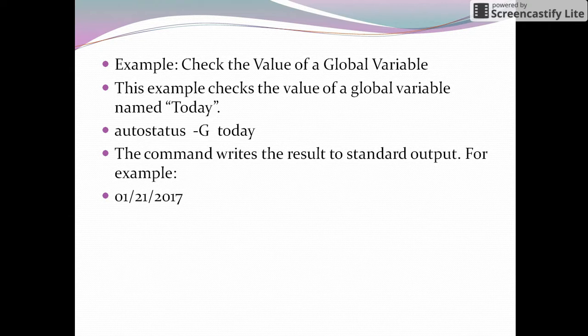We can get that value using the command autostatus -g today. In some environments, there are machine global variables like the main Autosys server and virtual servers, each with their own global machine variables. These may use status values like on, off, or delete. To know the status of a machine global variable, use the command autostatus -g.